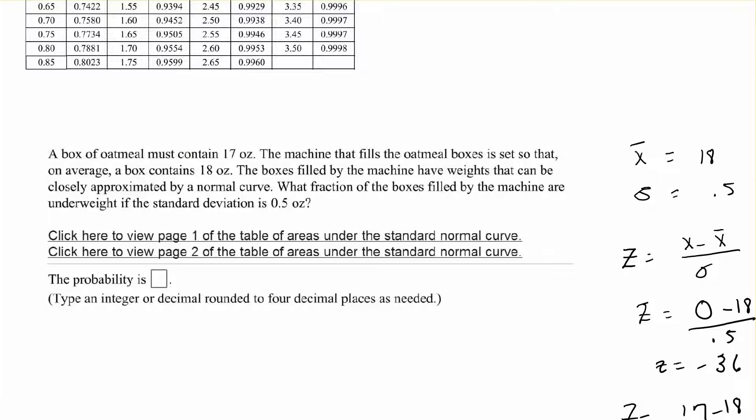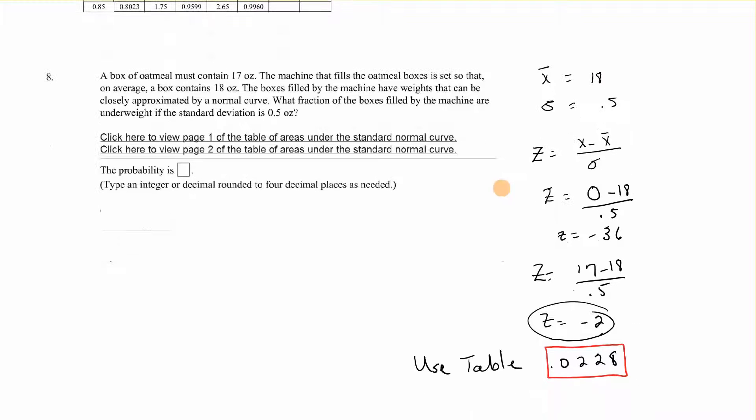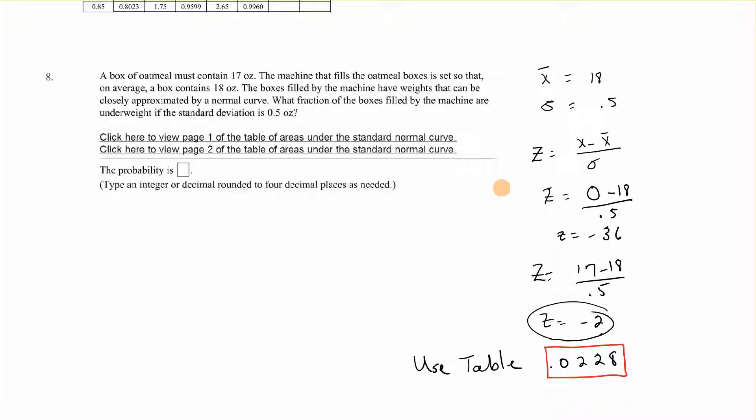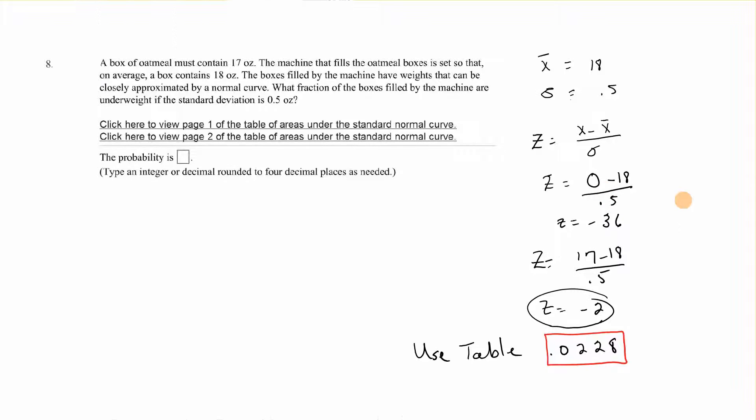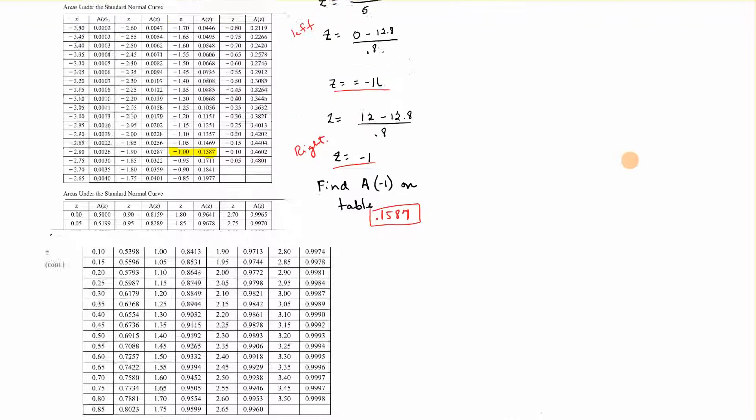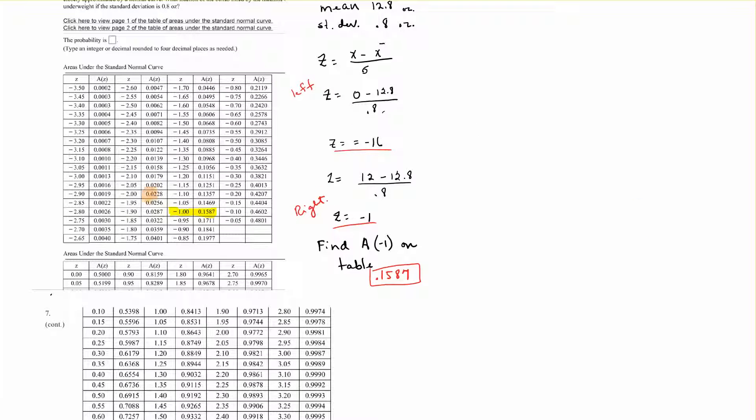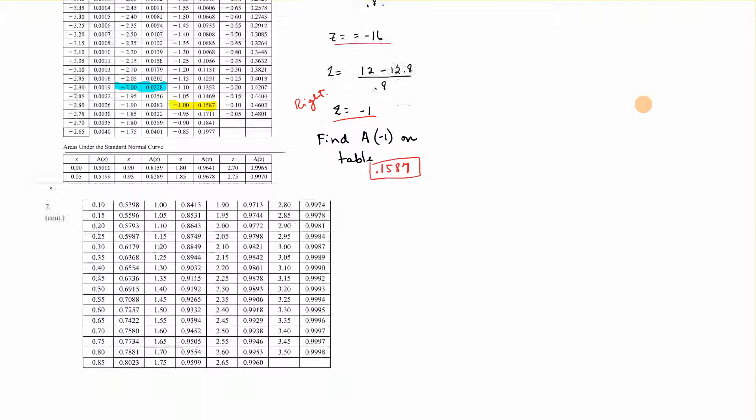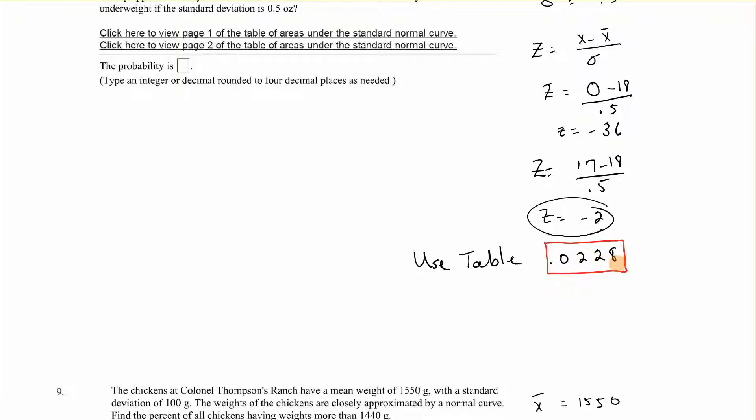Let's do the same thing with number 8. A box of oatmeal must contain 17 ounces. Average is 18 ounces, and standard deviation is 0.5. So the mean is 18, deviation is 0.5. We're going to do the same thing. We have 0 minus 18 divided by 0.5, which gives us a z-score of negative 36. That would give us an area of 0. If we do it from the right, we have 17 minus 18 over 0.5, which gives us negative 2. If we use the table and find negative 2, that gives us 0.0228. So that would be our probability, 0.0228.